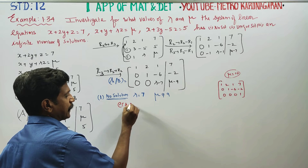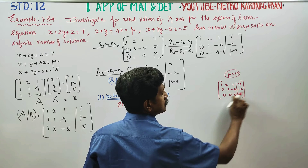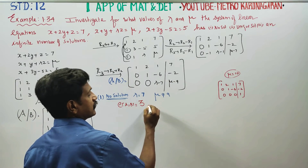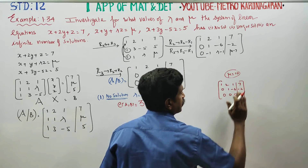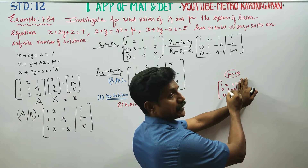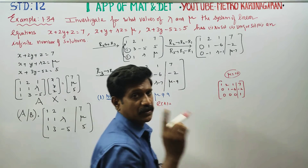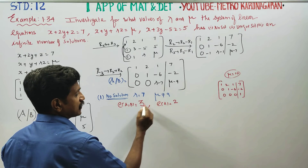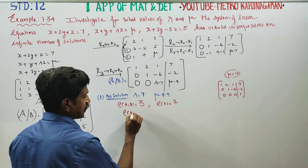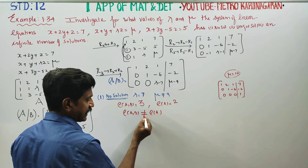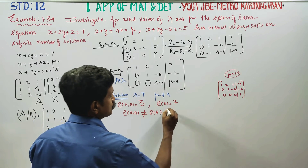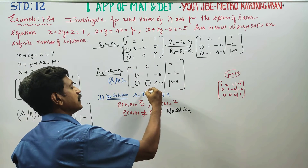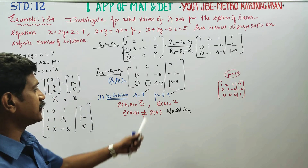Rank of A and rank of [A|b]: we count the non-zero rows. If rank of A is not equal to rank of [A|b], then the system has no solution. So when rank of A is not equal to rank of [A|b], the system is inconsistent. What should you declare? No solution. So the first case: no solution when lambda equals 7 and mu is not equal to 9.